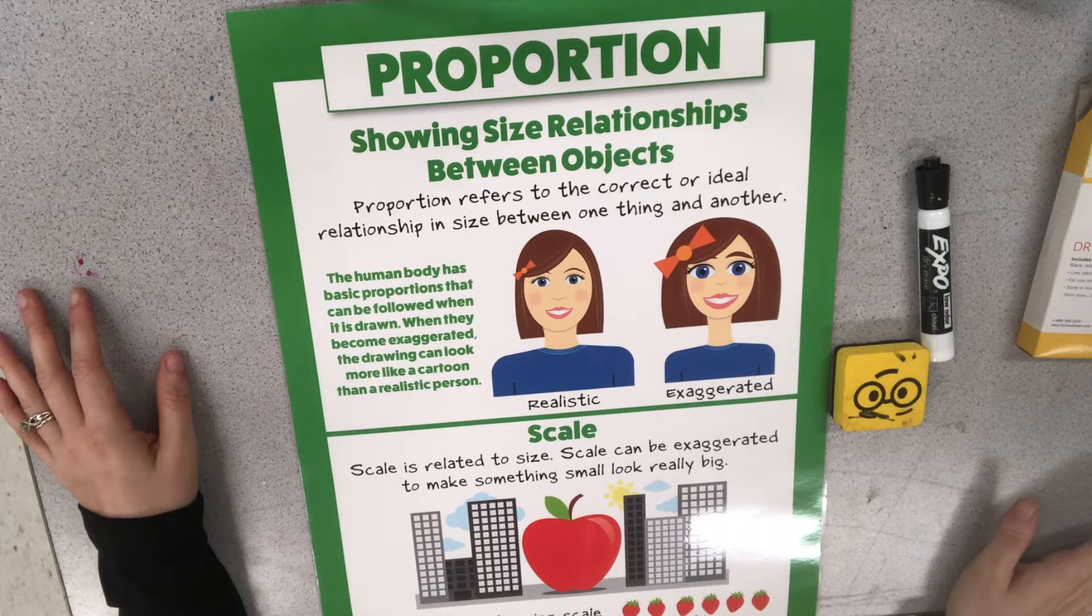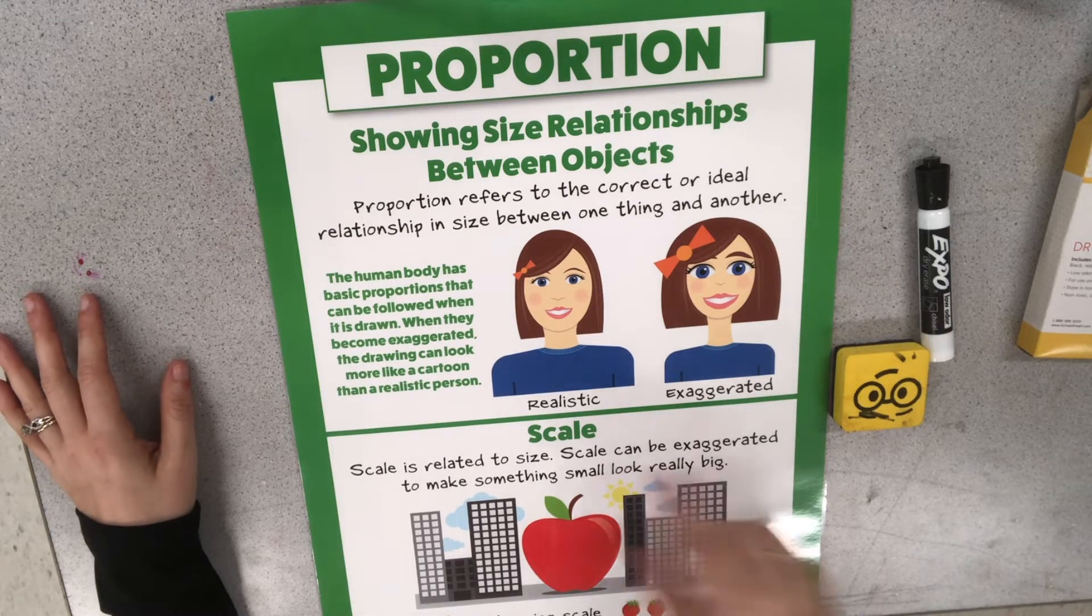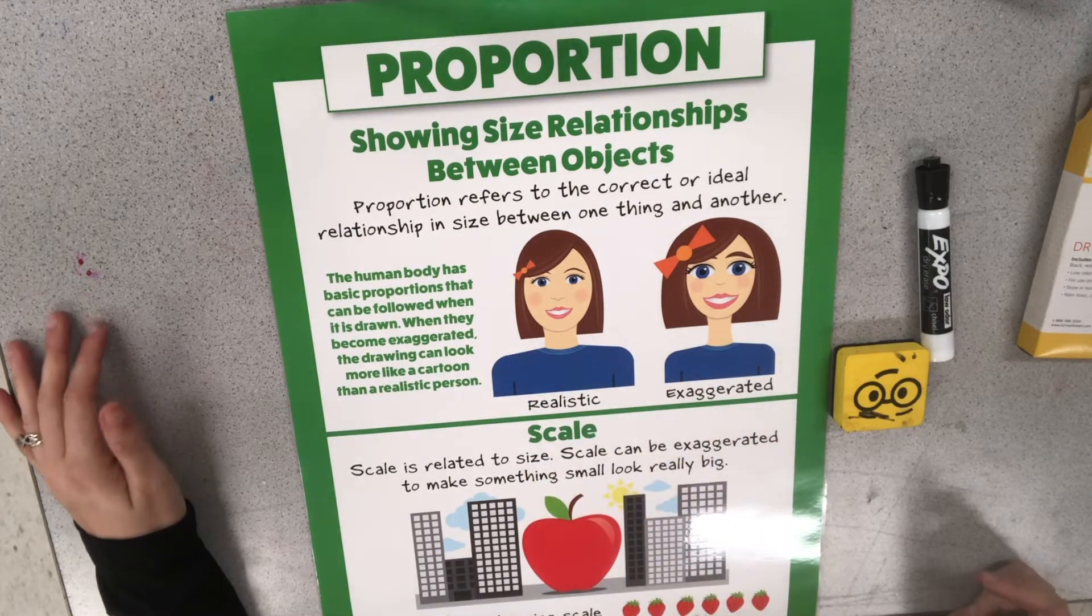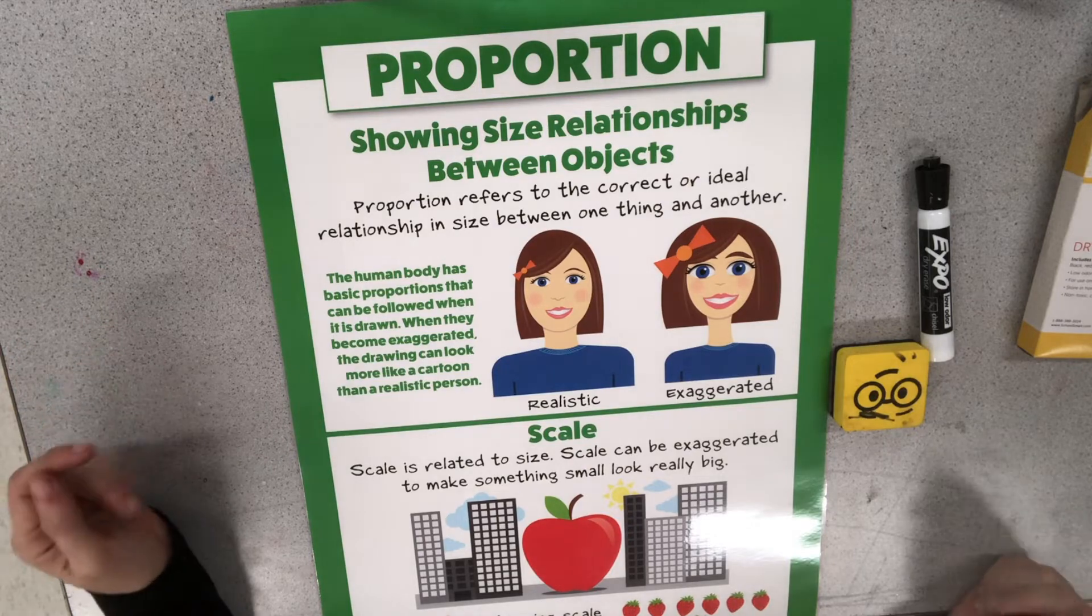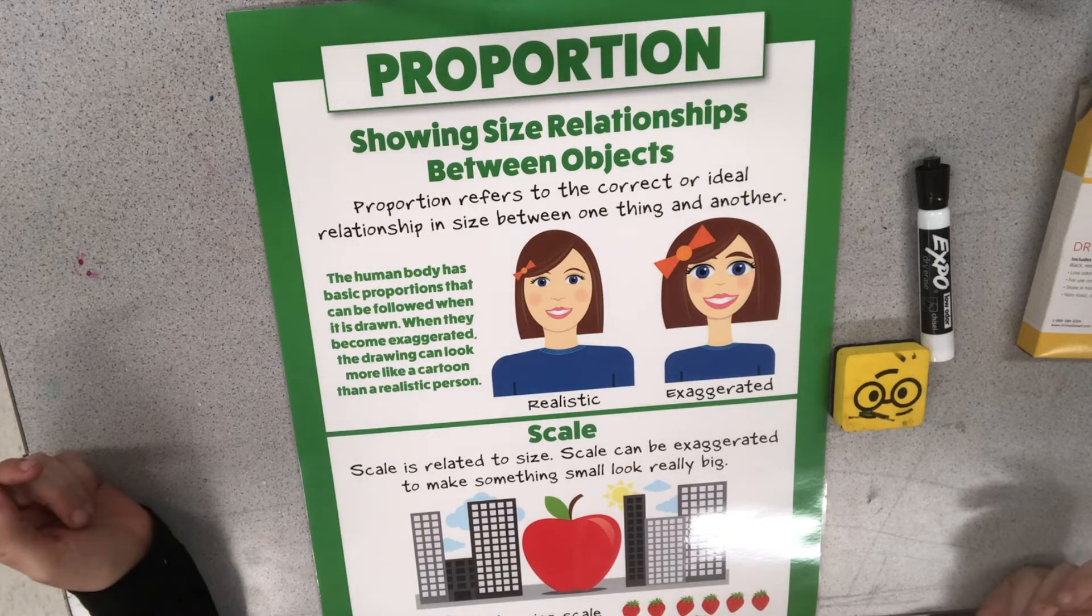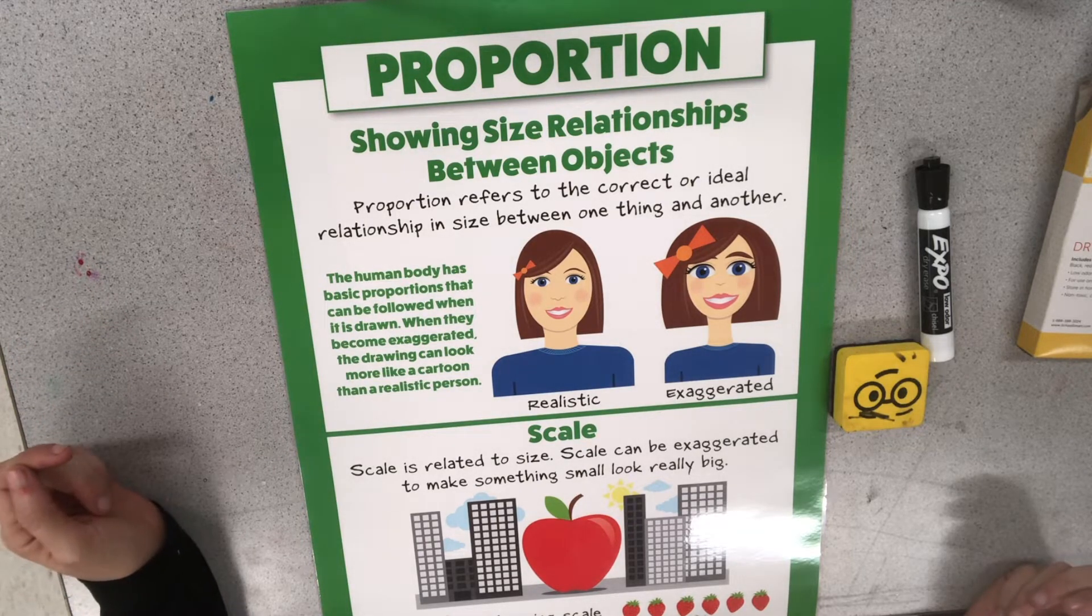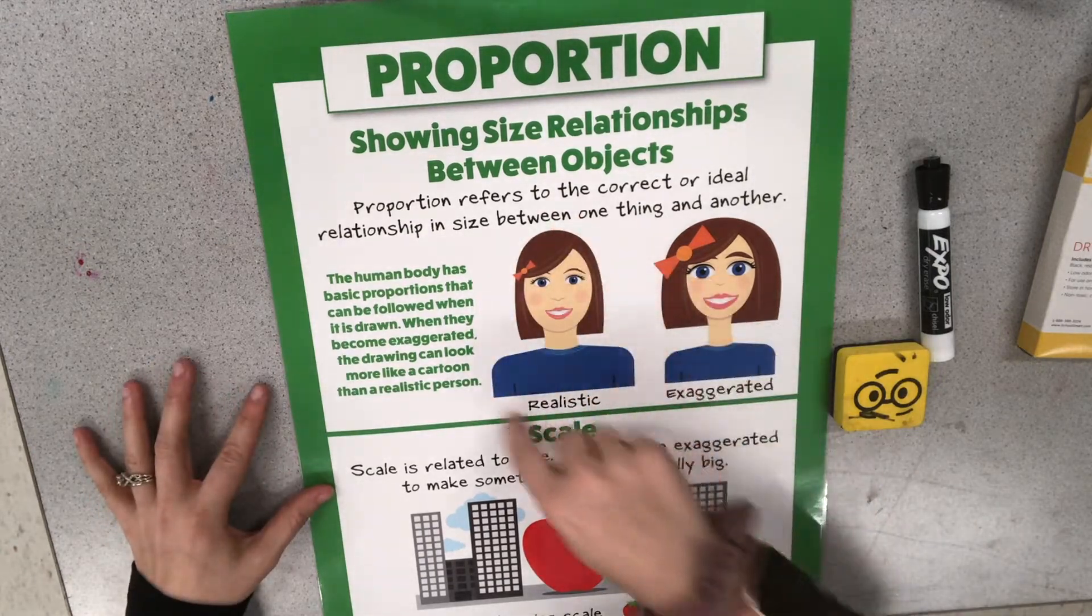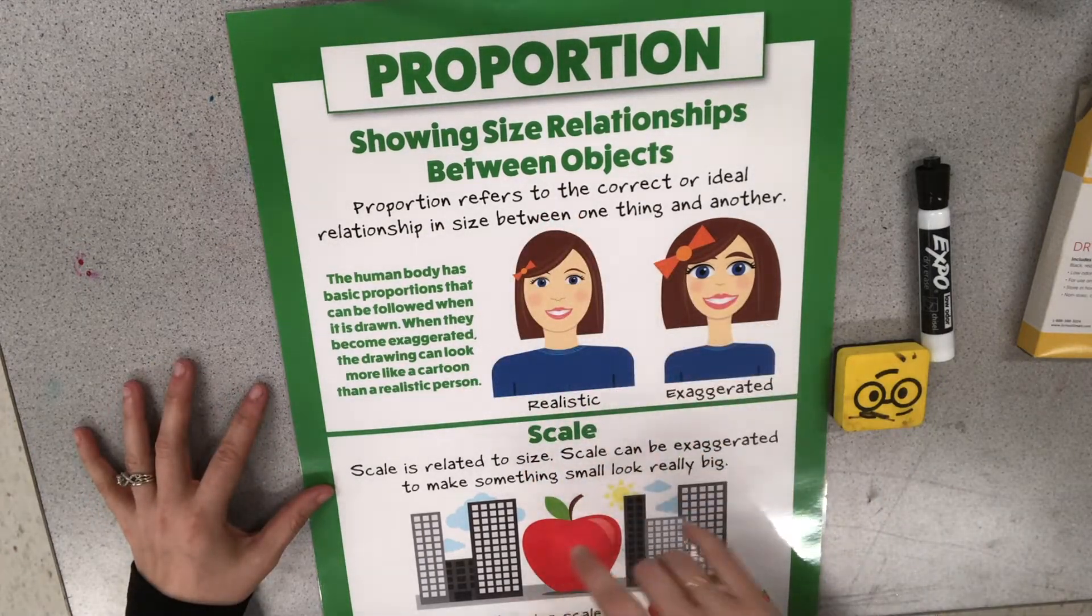Now when we are making people we're thinking about proportions. So this poster is all about proportion or the sizes of objects in relation to one another. So sometimes proportions can be realistic like this person here. So the eyes, nose, mouth, everything is a realistic size what it would be in real life.